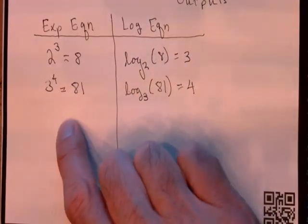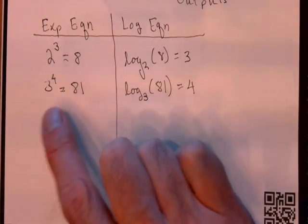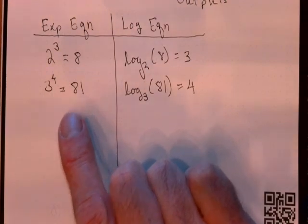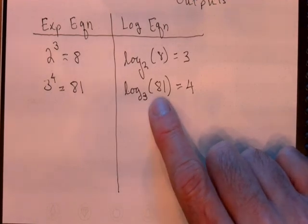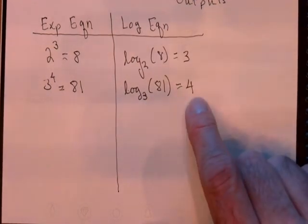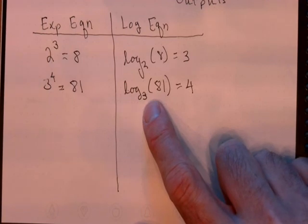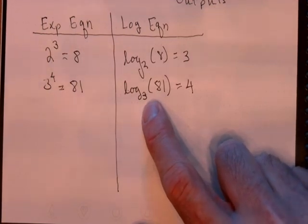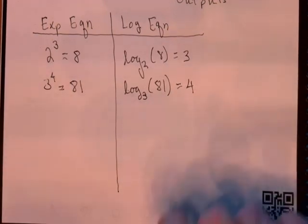3 power 4 is 81. The equivalent log equation is log base 3 of 81 equals 4. This is a true statement over here on the left. If you take 3 and raise it to the fourth power, you will get 81. You can check it on your calculator. And this equation over here is saying the exact same thing. I want to write 81 as a power of 3. What power should I use? Fourth power. The log tells you the power.